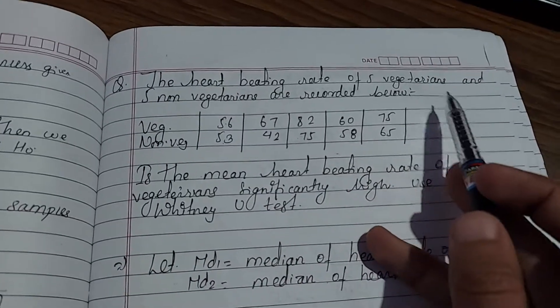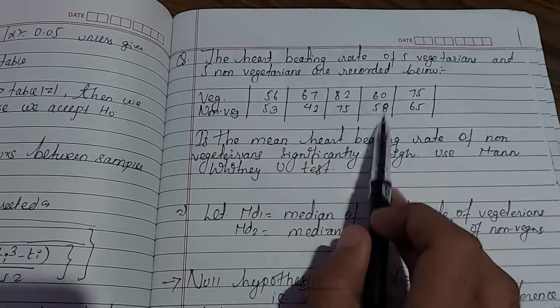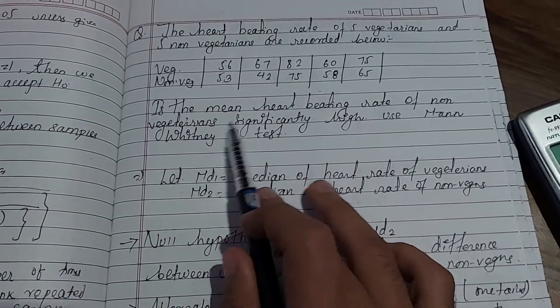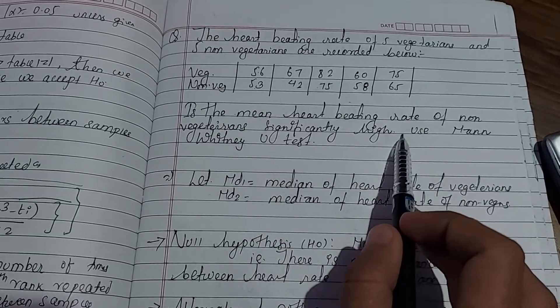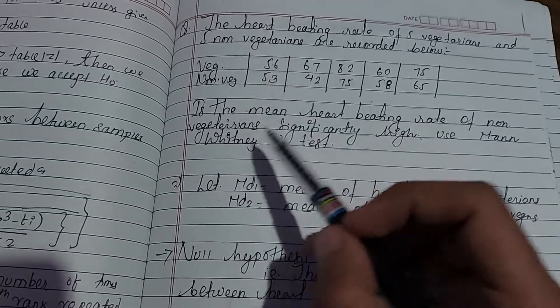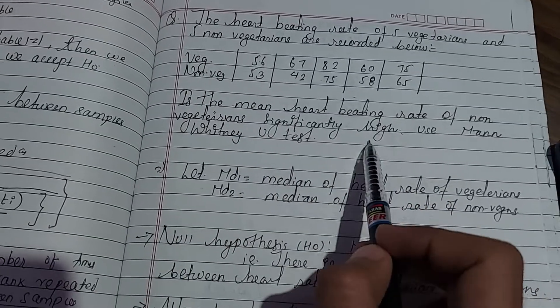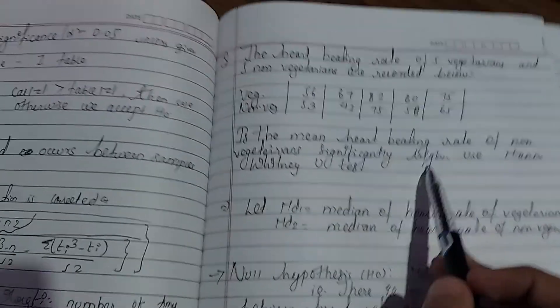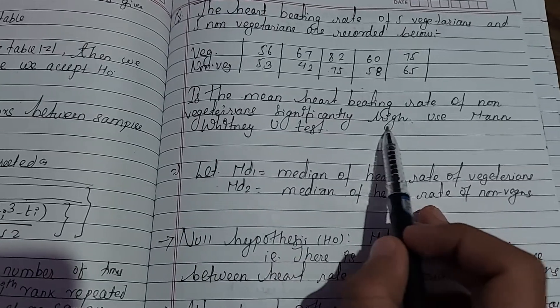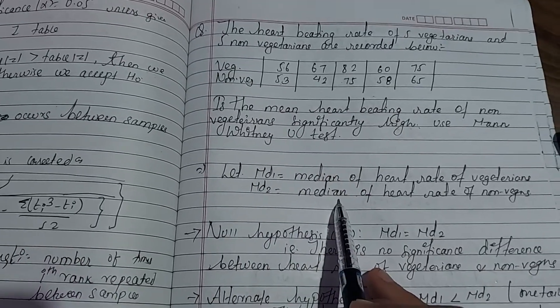Let's work through an example. The heart beating rate of five vegetarians and five non-vegetarians are as follows. We want to test whether the heart rate of non-vegetarians is significantly higher than vegetarians. First, I'll set up the hypotheses. Let Md1 represent non-vegetarians and Md2 represent vegetarians.